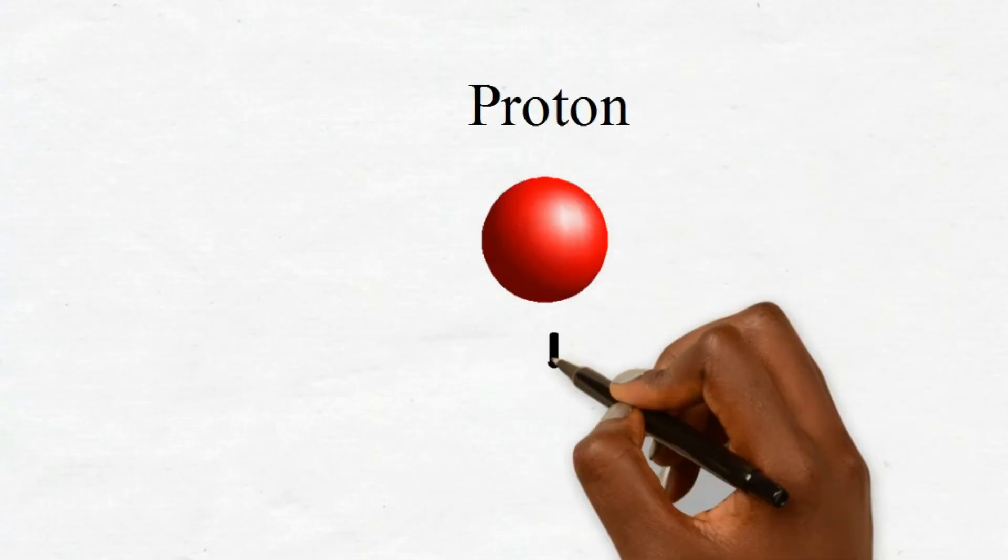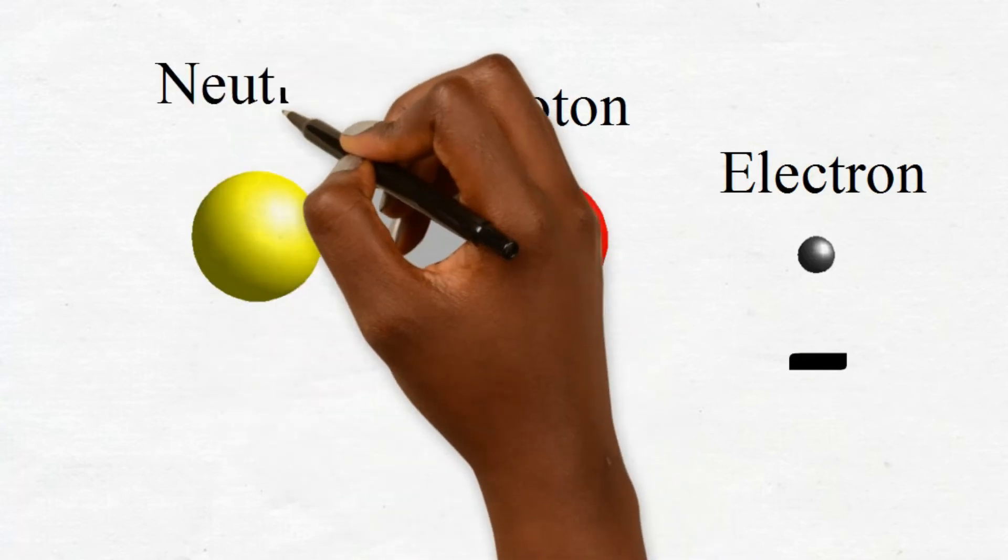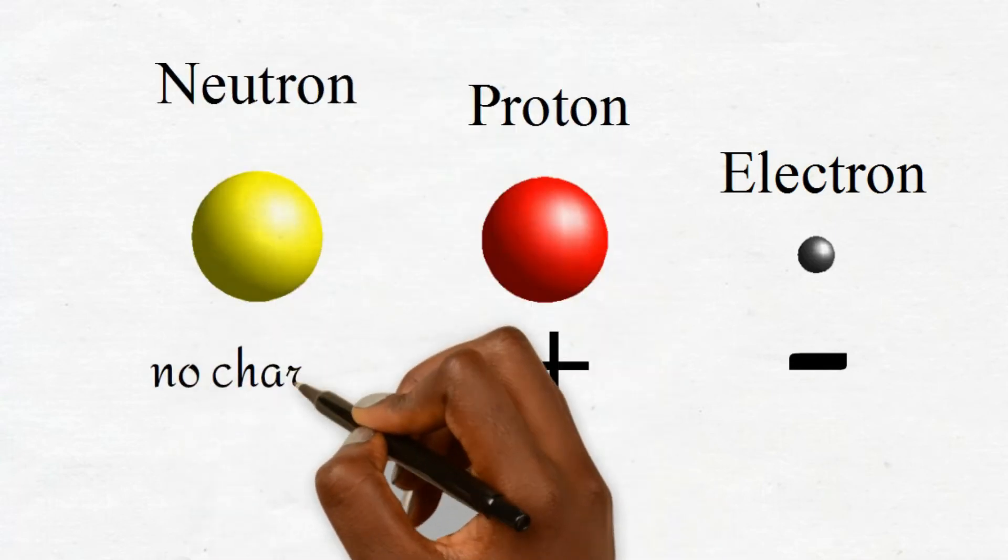The proton has a positive charge and was given the plus sign. The electron has a negative charge and was given the minus sign. Neutrons are neutrally charged or have no charge.